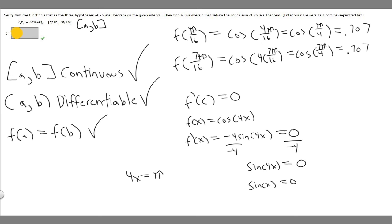Well we know that the sine of pi equals 0, so basically we need 4X to equal pi because if 4X equals pi then we're going to have 0.